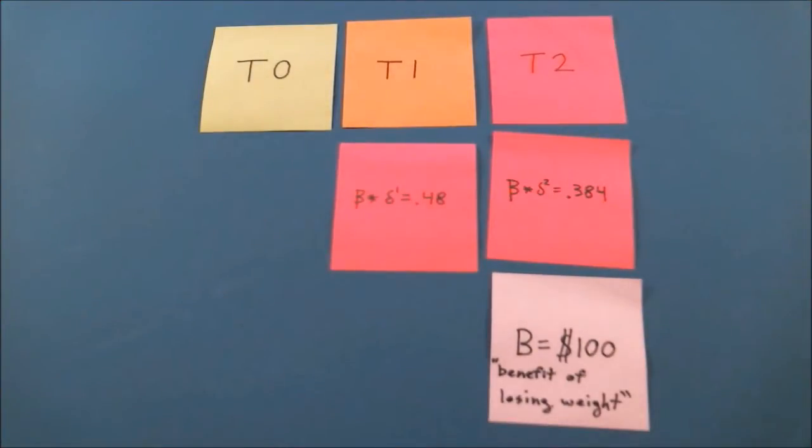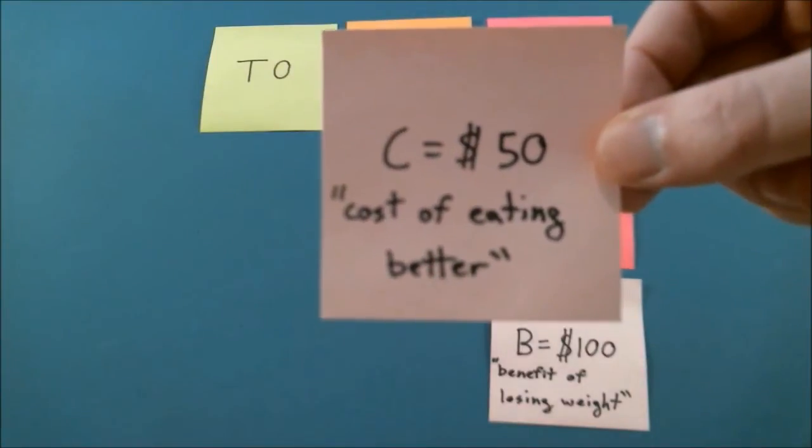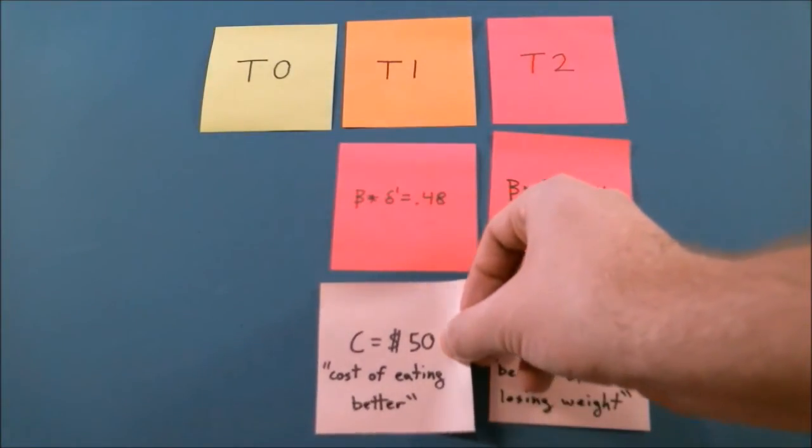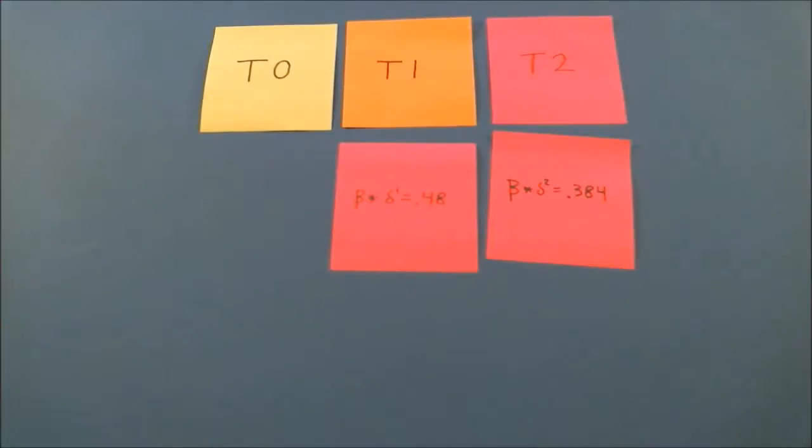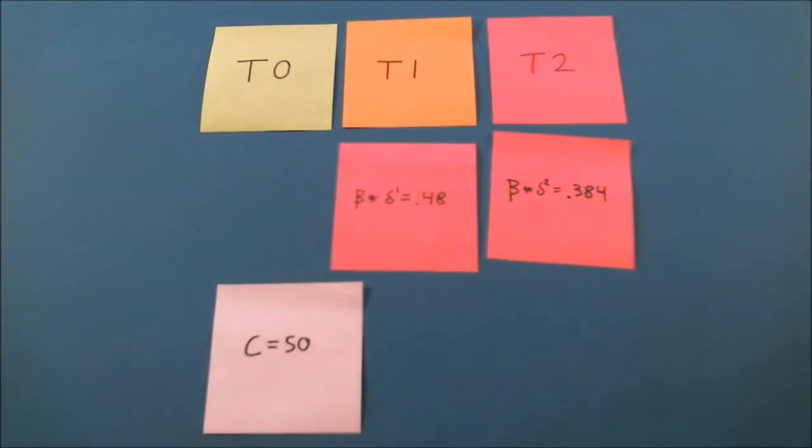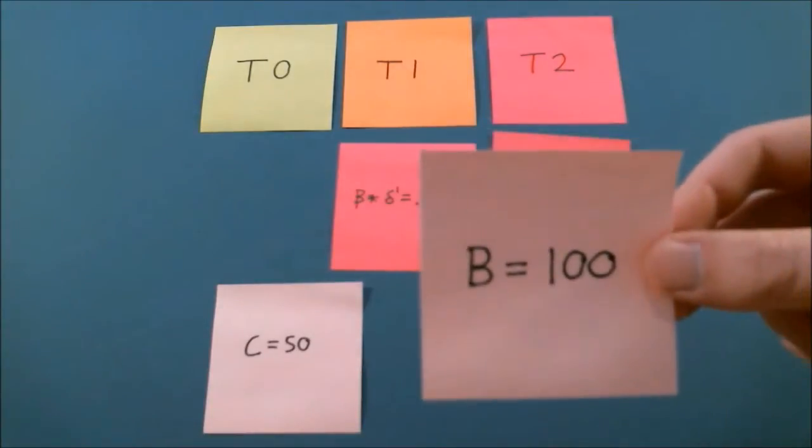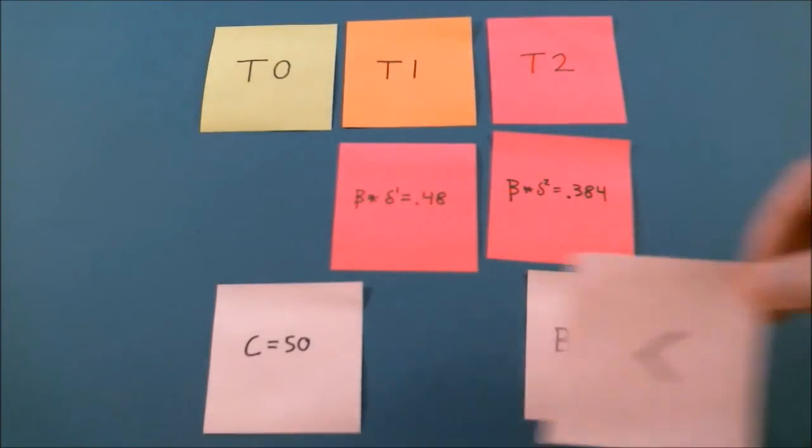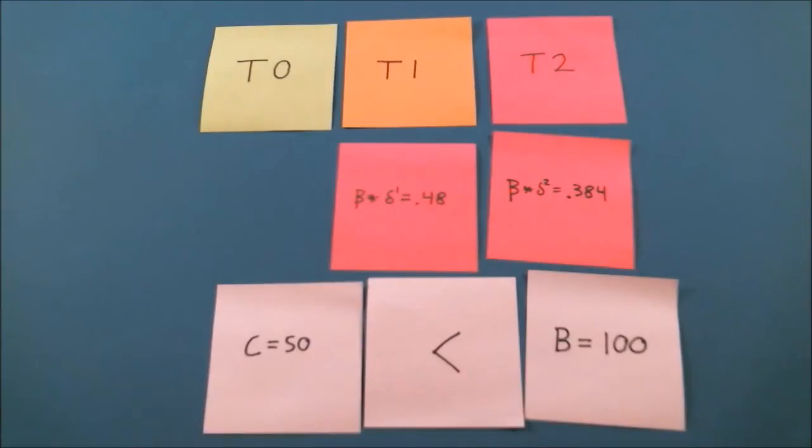Say I decide in T0 to eat better in T1 so I can lose weight in T2. I value the benefit of losing weight at $100, and consider the cost of eating better to be $50. Since 50 is less than 100, I would clearly want to eat better and lose weight if the results were immediate.